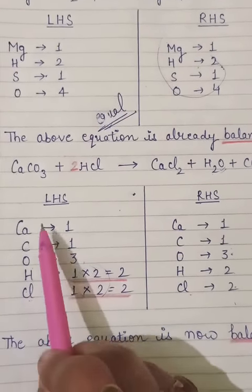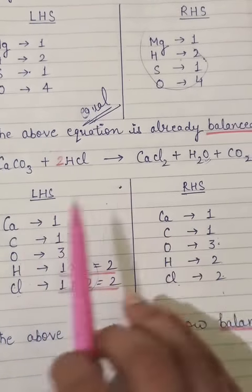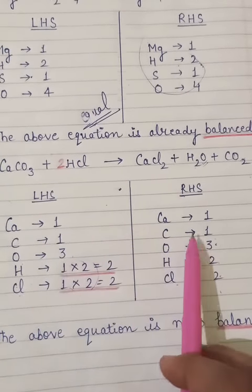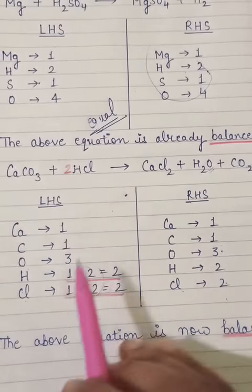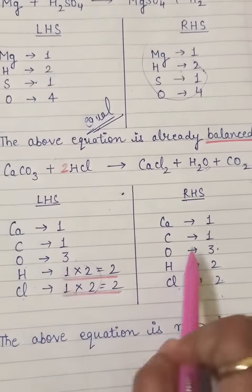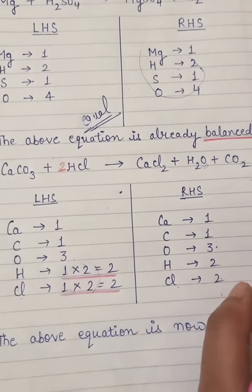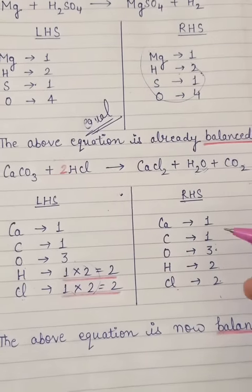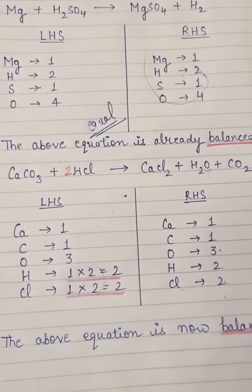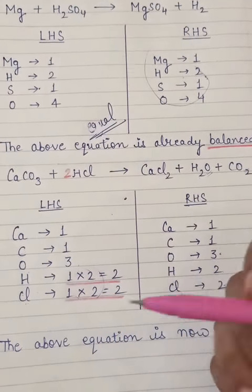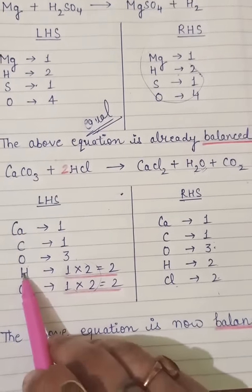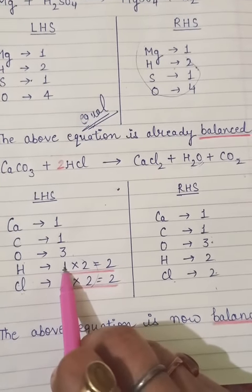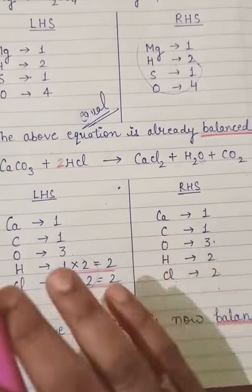Now come to RHS: calcium one, carbon one. For oxygen look carefully - one oxygen here and two oxygens there, so two plus one equals three. Hydrogen is two and Cl is two. So you can see I have written number of atoms first, not balancing yet. Just counted the atoms.